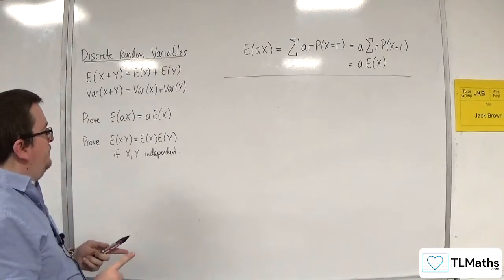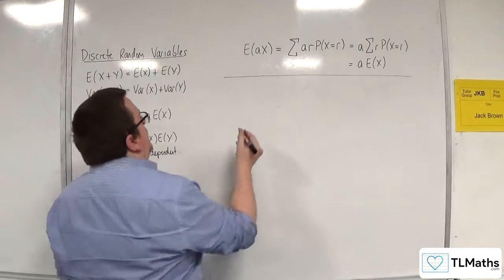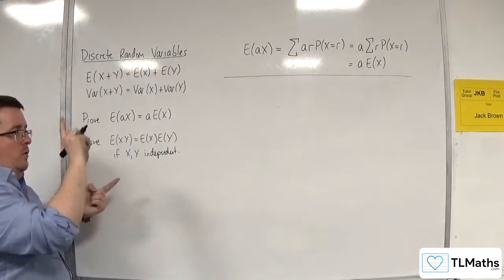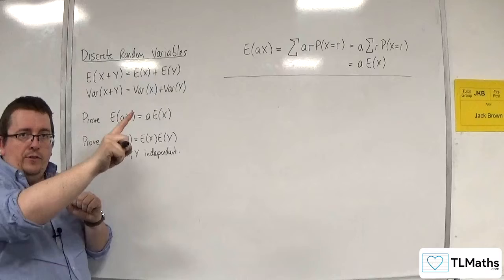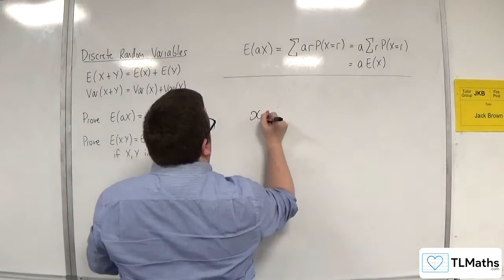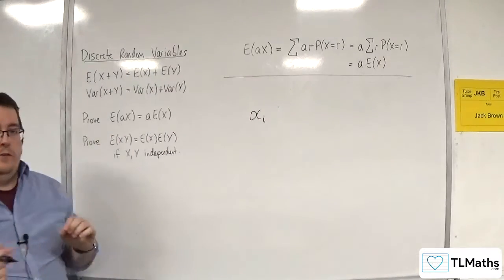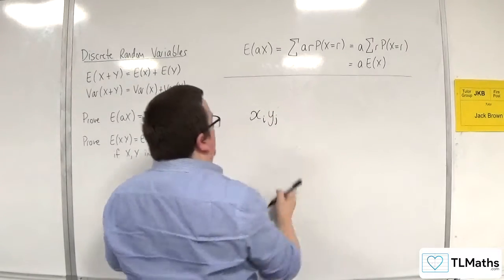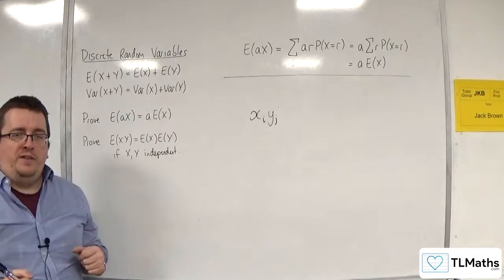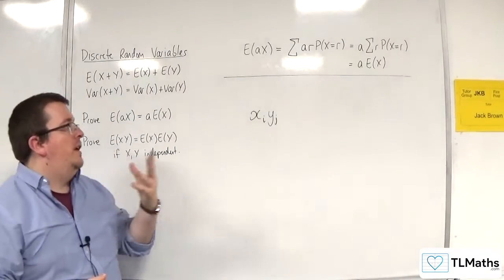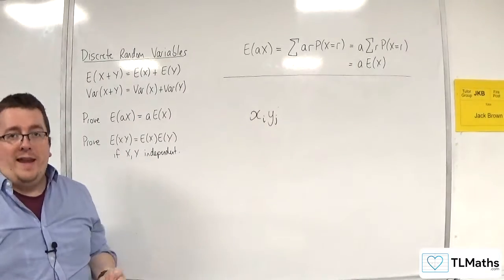what you would have is you would have each of your X's, each of your xi's times each of your yj's. They would be multiplied together, and each one of those needs to be multiplied by the probability of xi and yj happening.